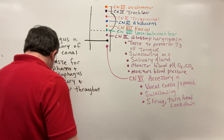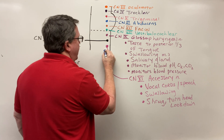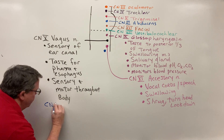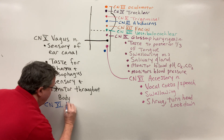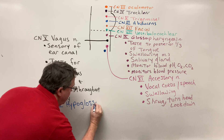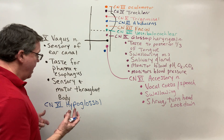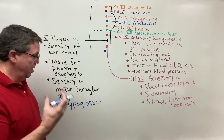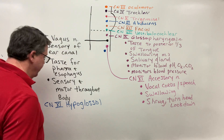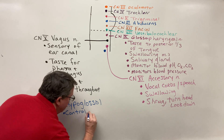Last but not least, cranial nerve 12 is the hypoglossal nerve. The term 'glossal' means tongue, and 'hypo' means under, so this nerve is under the tongue. It controls the tongue muscles, allowing you to consciously move your tongue — for example, sticking your tongue out.